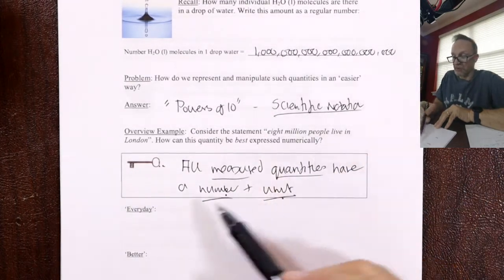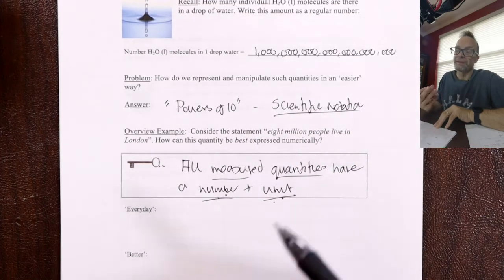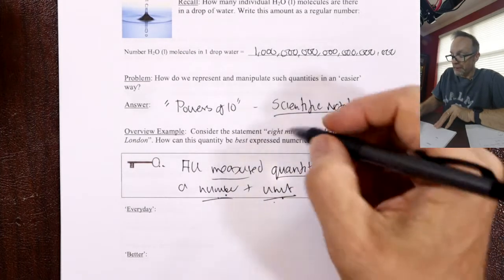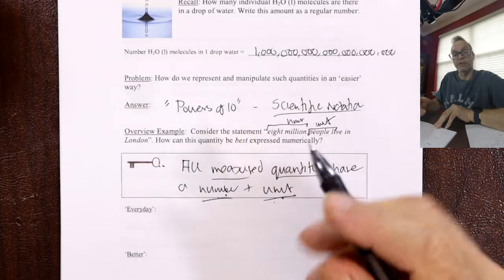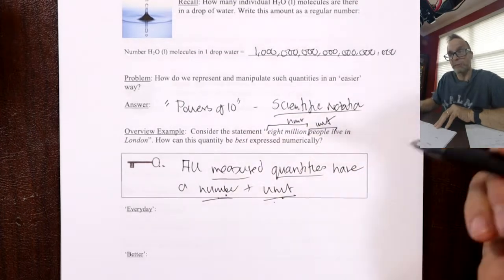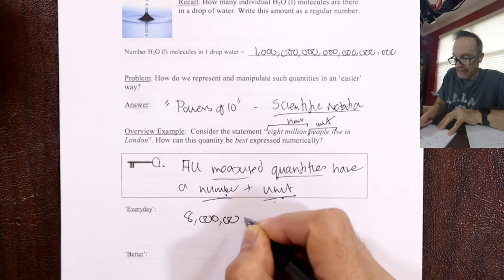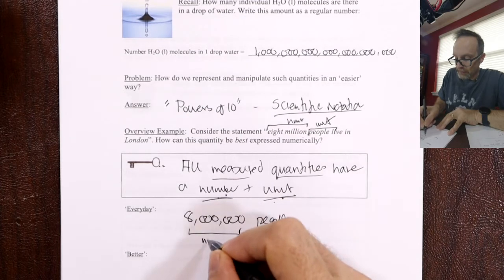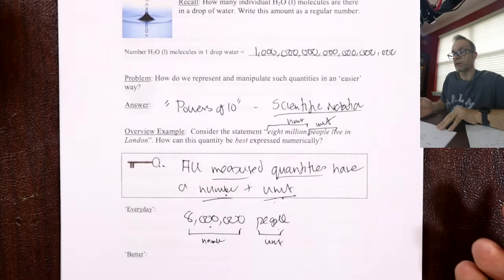Any answer that doesn't have a number and a unit — it's points off. So 8 million people: 8 million is the number, people is the unit. Things you're counting are the unit. Number and unit together make a quantity.